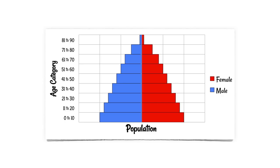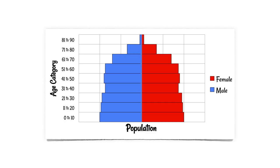By contrast, this population pyramid shows a slightly more block shape. There isn't a significantly larger proportion of young people compared to older people, which suggests that the population is probably remaining relatively constant.